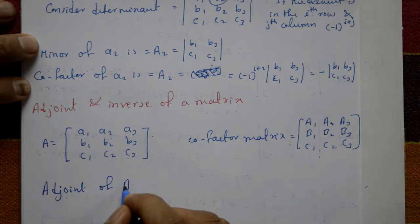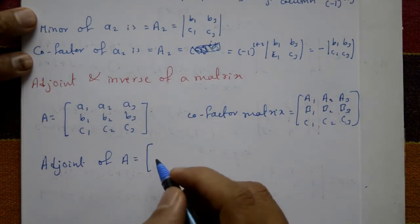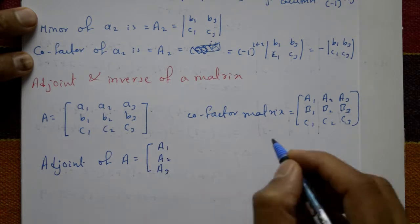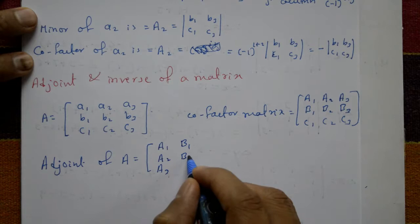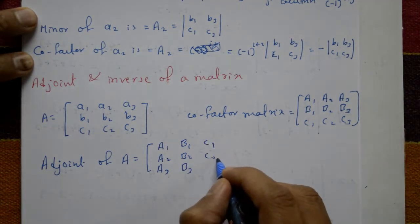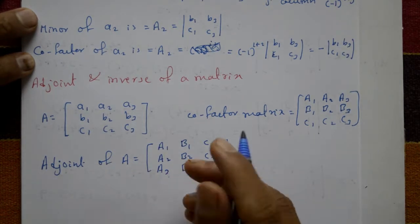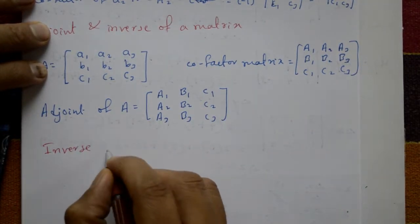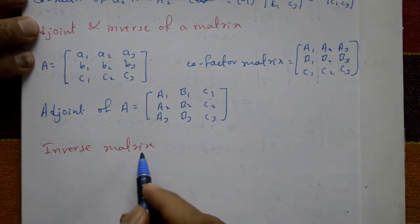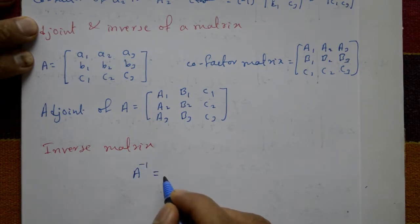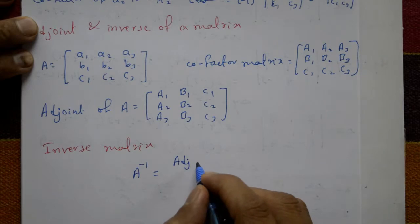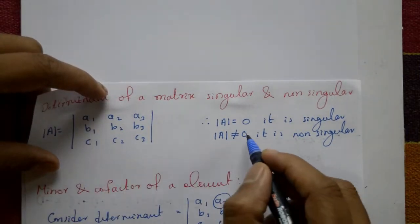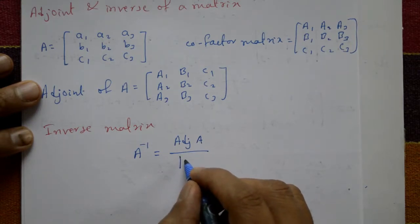The adjoint of matrix A is obtained by transposing the cofactor matrix — rows become columns and columns become rows. So the first row A1, A2, A3 becomes the first column, and so on. Finally, the inverse of A is equal to the adjoint of A divided by the determinant of A, provided the matrix is non-singular (determinant of A not equal to 0).